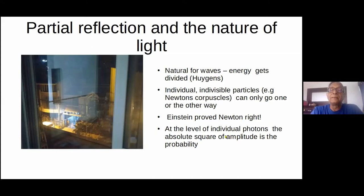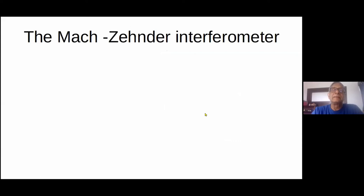Einstein had the courage to say that yes, light does consist of individual particles — that is the only way to understand the photoelectric effect. He wrote this paper when he was only 26 years old, and it is very different from his papers on relativity and Brownian motion. He says it is a very provisional viewpoint — he is not sure how we will understand the wave properties, but we are forced to think of light in terms of particles. So we are forced to say that the absolute square of the complex amplitude is the probability.